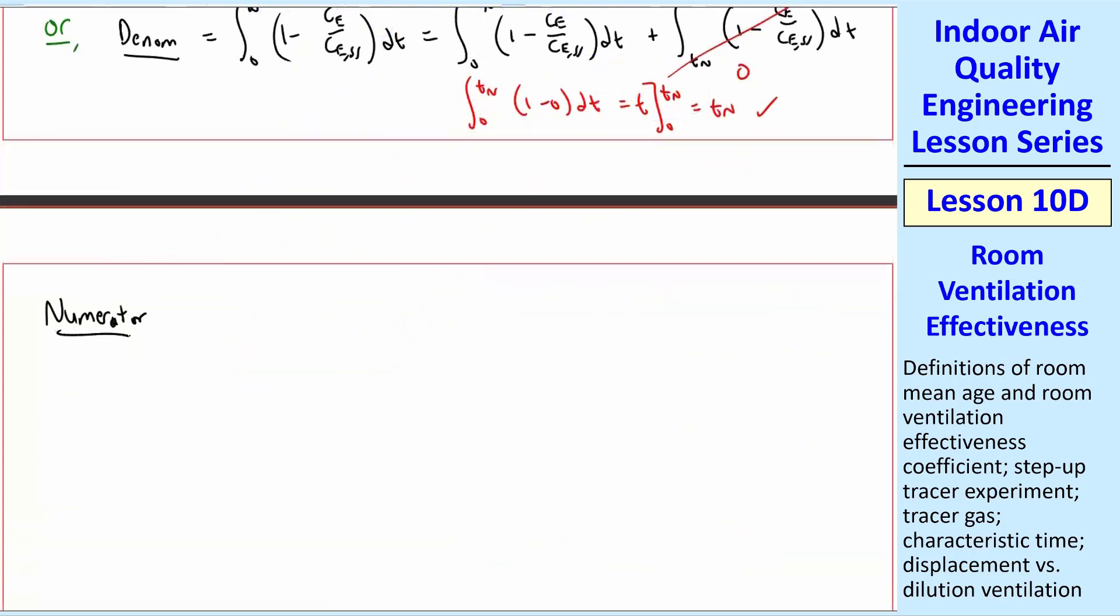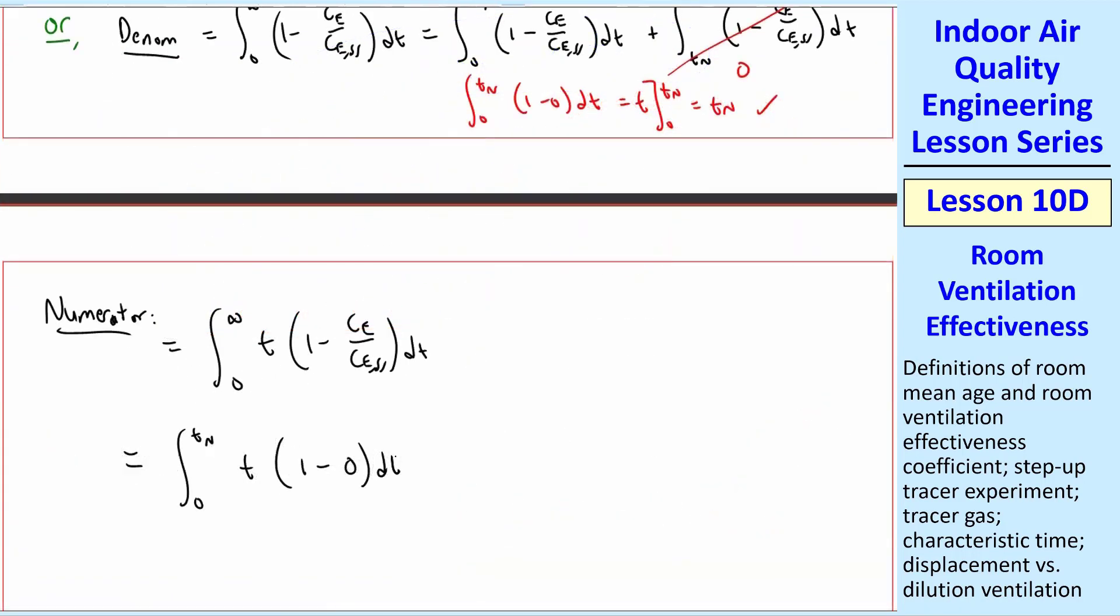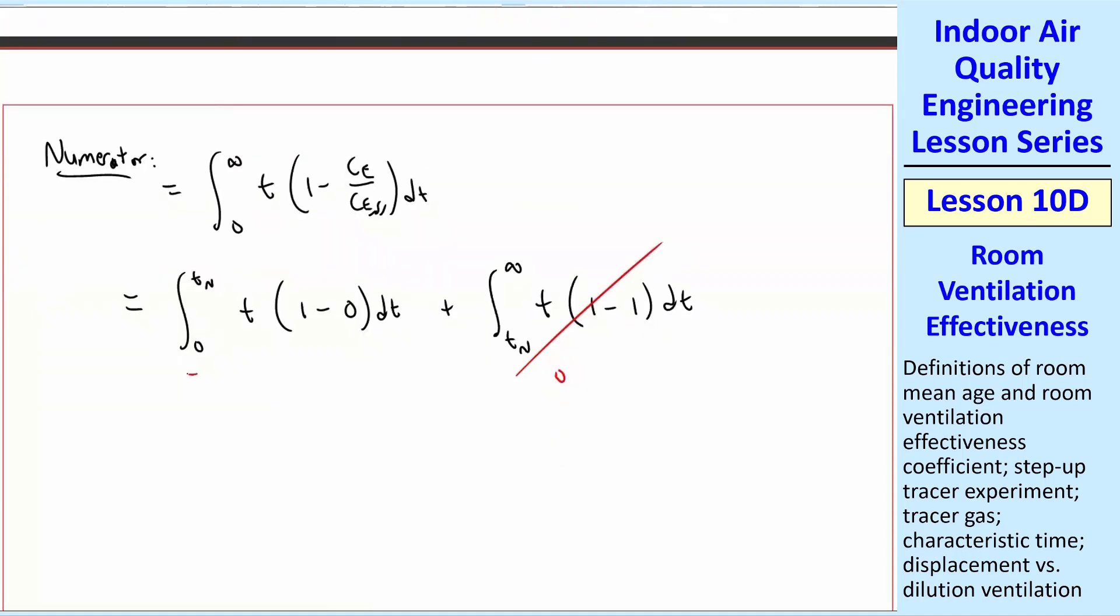All right, now the numerator involves the same kind of thing, but a little more algebra always, because we have an extra time in there. Integral 0 to infinity of T times 1 minus CE over CESS. Again, we're going to split it up. Integral 0 to TN as our first part of this piecewise function of T times 1 minus, and what's the value of CE over CESS? It's 0 between 0 and TN integrated with respect to DT plus integral of TN to infinity of T times 1 minus CE over CESS is 1. So again, this whole second part becomes 0. We don't have to worry about it anymore. We just have to integrate this guy. That's just T DT, so this is equal to T squared over 2, and then put in the limits 0 to TN, so this is TN squared over 2. So that's the numerator.